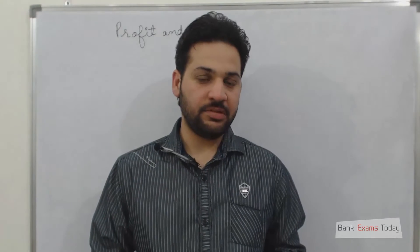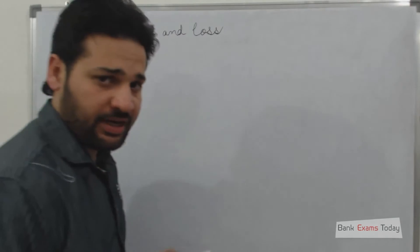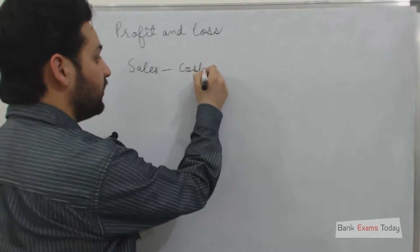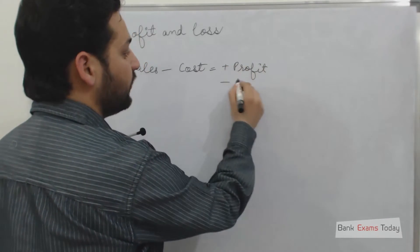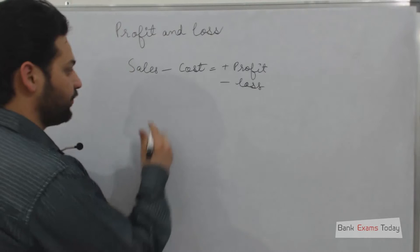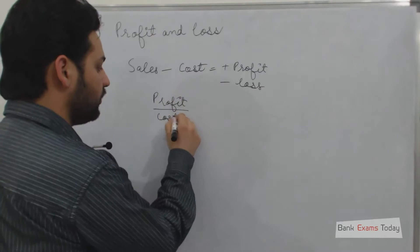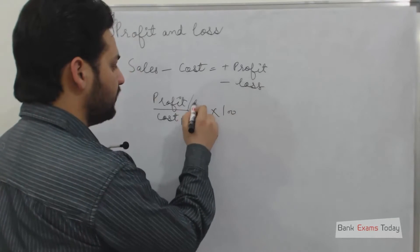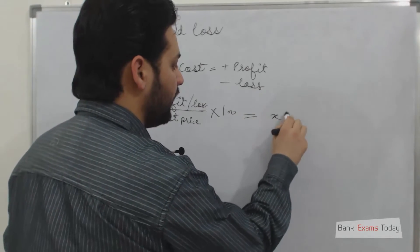Hello friends, welcome back to bankism today dot com. Today we will do the chapter Profit and Loss. First of all, profit is simply selling price minus cost price — if it is positive then it is profit, and if it is negative then it is loss. To calculate profit percentage: profit divided by cost price, multiplied by 100. Similarly we can calculate the loss percentage.